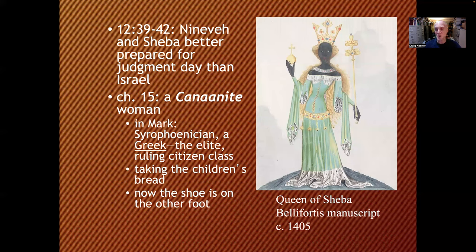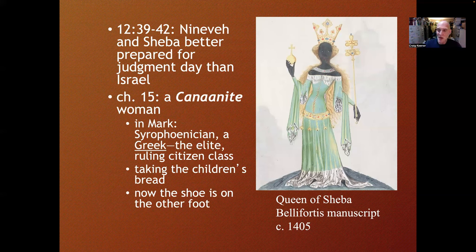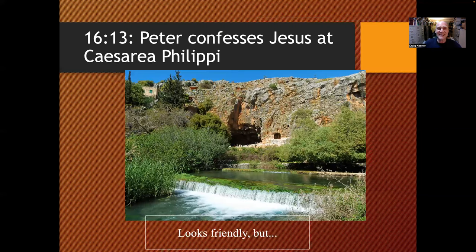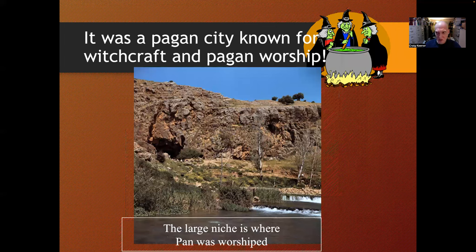In chapter 15, there's a Canaanite woman. In Mark she's called Syrophoenician and belongs to the elite ruling citizen class — more of a class issue there. But here it's clearly an ethnic issue: the displaced Canaanites had settled in Phoenicia. This isn't the first Canaanite woman in this gospel — you already have Rahab and Tamar. In chapter 16, verse 13, Jesus puts the question to his disciples at Caesarea Philippi — a pagan place known for the worship of Pan and witchcraft — 'Whom do you say that I am?' and Peter confesses.